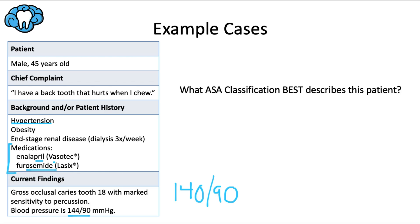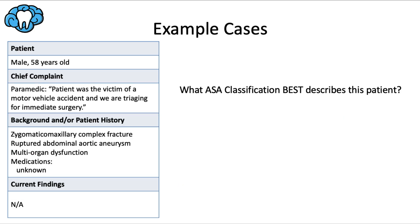That points toward ASA 3. The obesity is ASA 2 if BMI ≥ 30, or ASA 3 if morbidly obese with BMI ≥ 40 — that would point toward ASA 2, but we already have an ASA 3. They also have end-stage renal disease: ASA 3 if under dialysis, ASA 4 if not. They're doing dialysis three times a week, which is standard, so that's also ASA 3. When you have multiple factors from different ASA levels, you always go with the highest one — so the answer here is ASA 3.